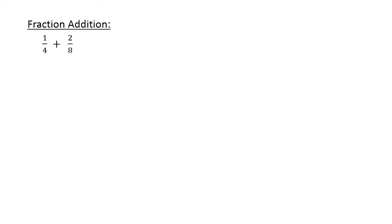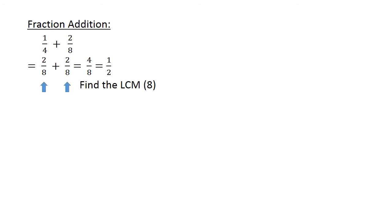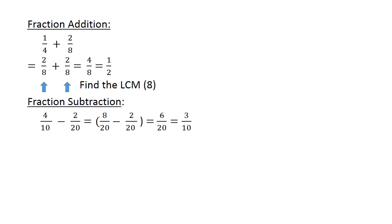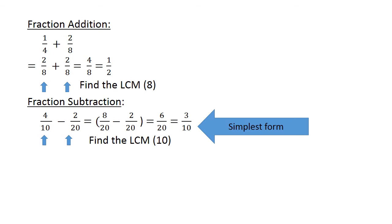Fraction addition: 1 over 4 plus 2 over 8. Find the lowest common multiple: 2 over 8 plus 2 over 8 equals 4 over 8, which equals 1 over 2. Fraction subtraction: 4 over 10 minus 2 over 20. Find the lowest common multiple: 8 over 20 minus 2 over 20 equals 6 over 20, which equals 3 over 10 in simplest form.